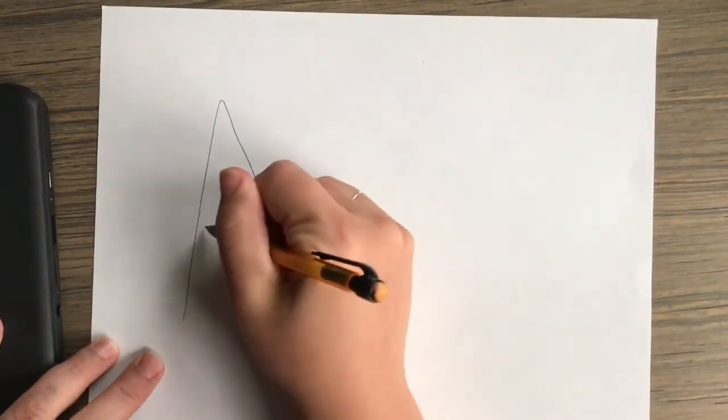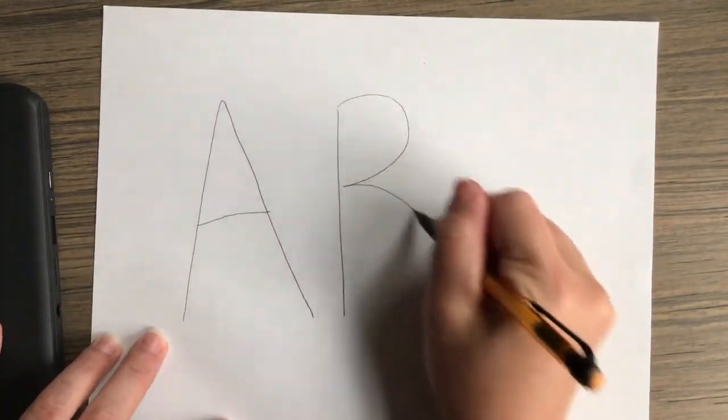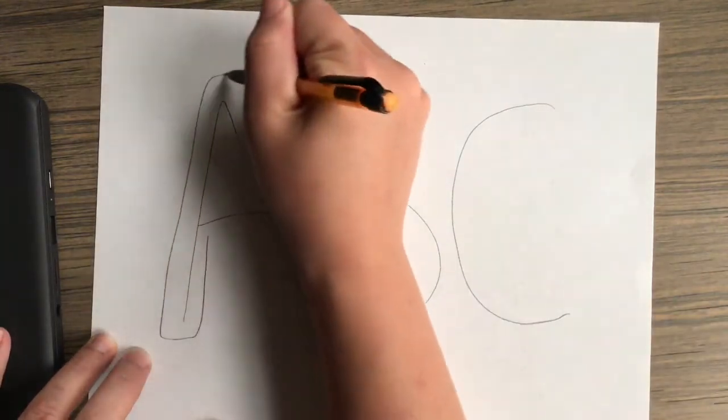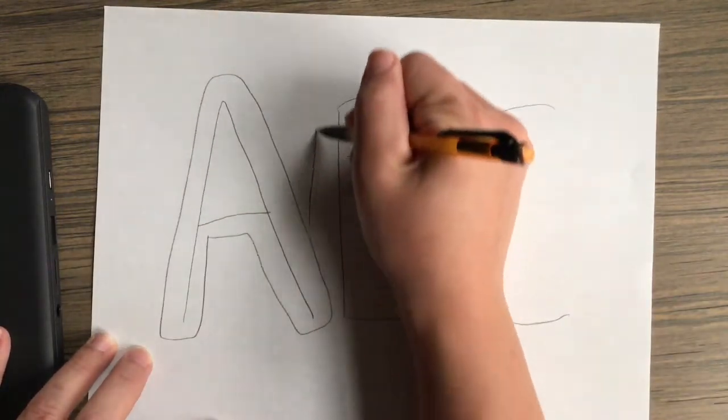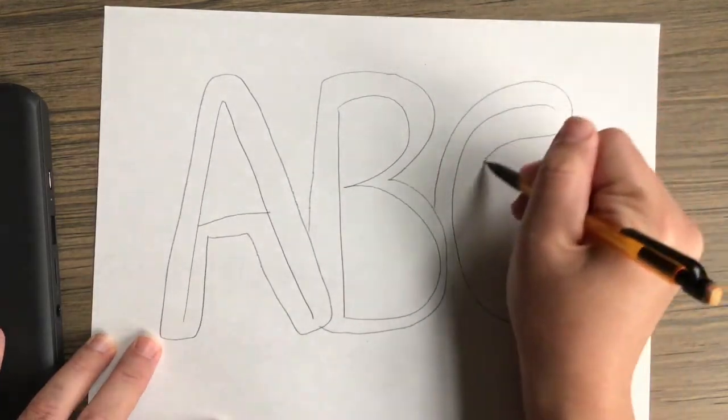To start, you'll need to make some bubble letters. If you're not sure how to make bubble letters, you could just write the letter the way you normally would with simple lines, and then trace the shape around those letters.